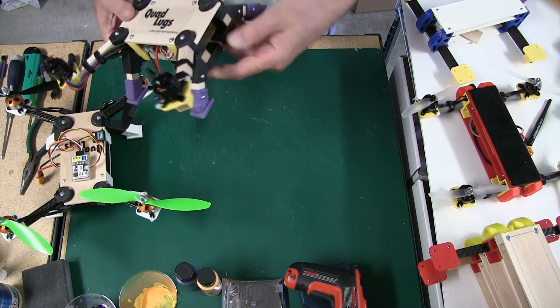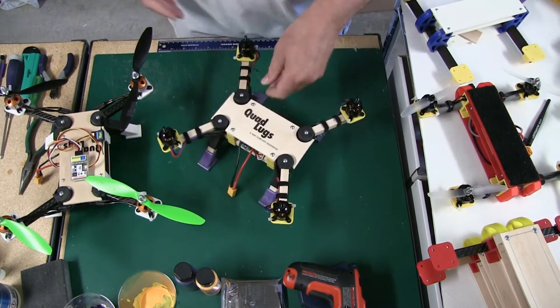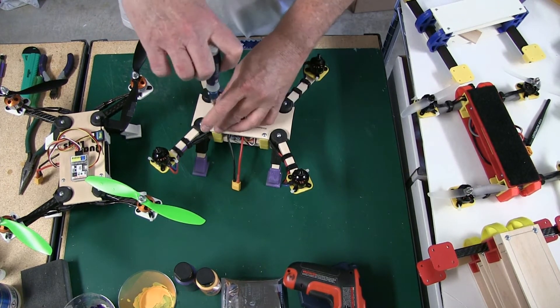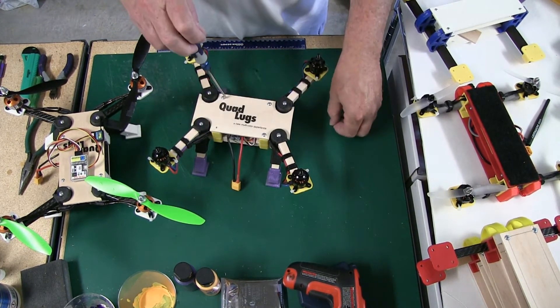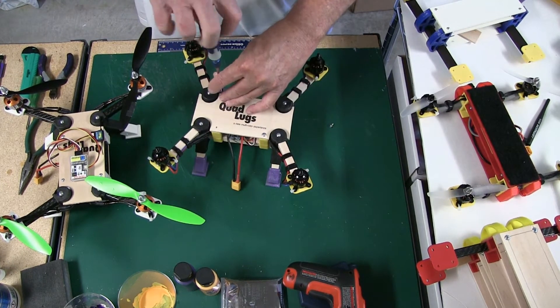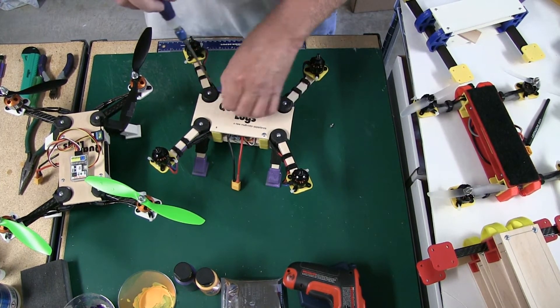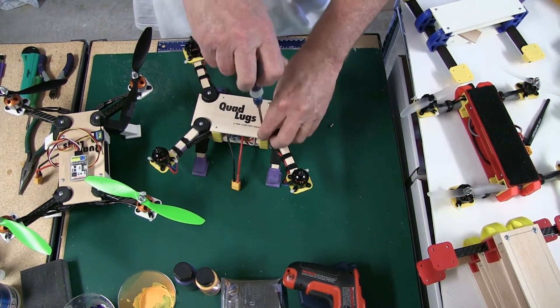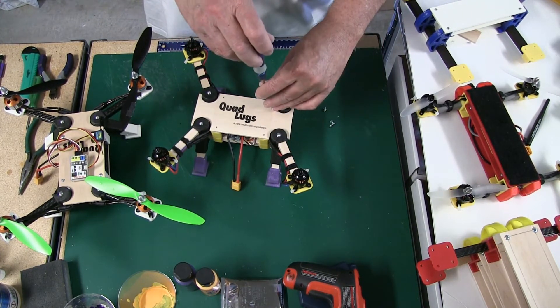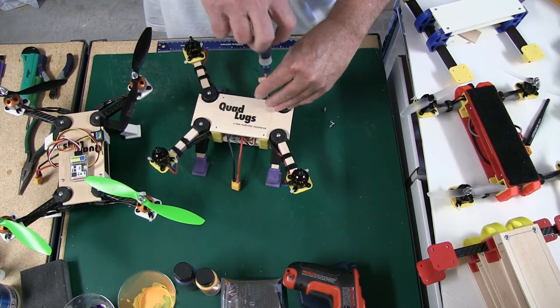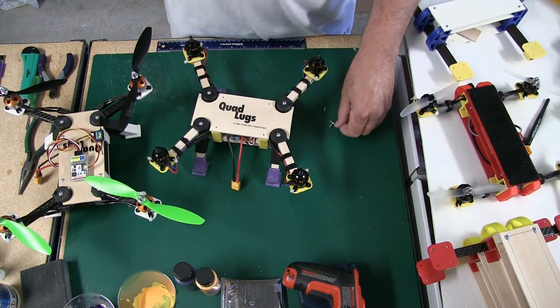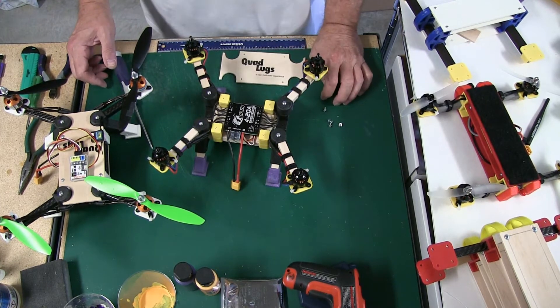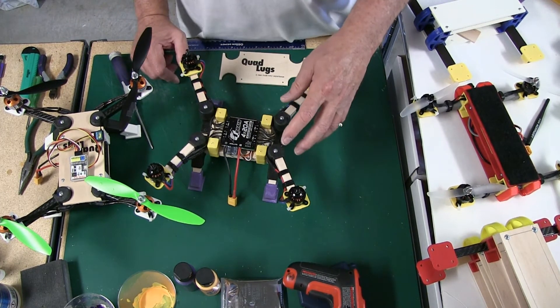Let's take a quick look at it. We're using a 4-in-1 ESC with this, but with ESCs getting smaller and smaller, and we'll have some information coming out on that pretty soon, you can use individuals and put them pretty much anyplace. The only thing we've done different with this build here is that the body support lugs are put together a little bit differently.